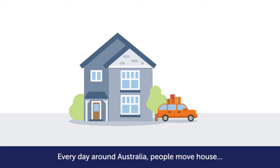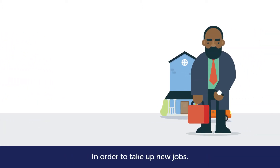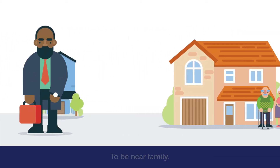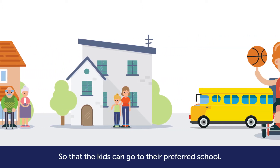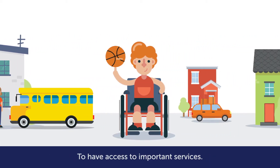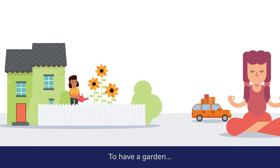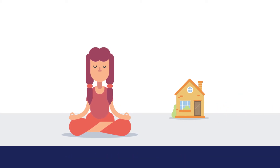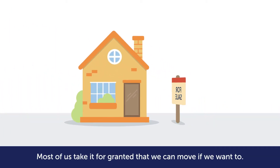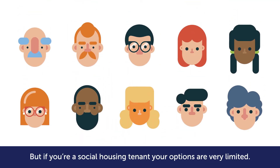Every day around Australia people move house in order to take up new jobs, to be near family, so that the kids can go to their preferred school, to have access to important services, to have a garden or to get away from the hustle and bustle. Most of us take it for granted that we can move if we want to, but if you're a social housing tenant your options are very limited.